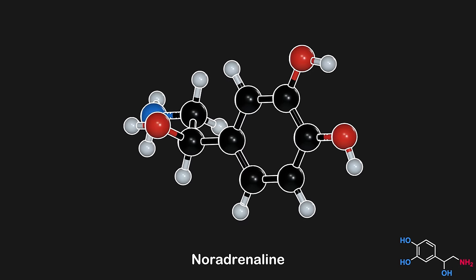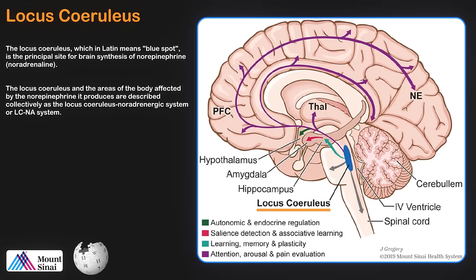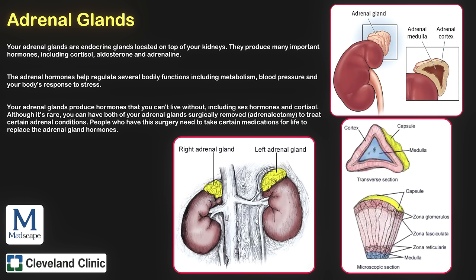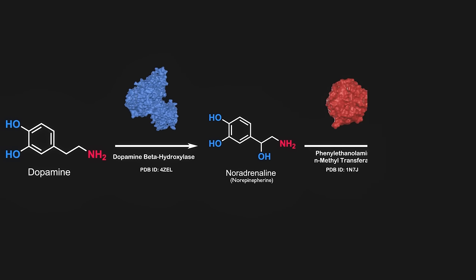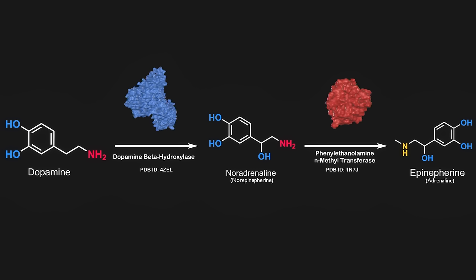Noradrenaline is primarily synthesized in the locus coeruleus, a small but significant part of the brain. This region serves as a master control, responding to stressors and indicating a cascade of bodily effects. It's worth noting that the adrenal glands also produce noradrenaline, which functions as a hormone in the body more broadly. Dopamine is converted into norepinephrine through the enzyme dopamine beta-hydroxylase. It can be further converted into epinephrine, also known as adrenaline, through the enzyme phenylethanolamine N-methyltransferase.